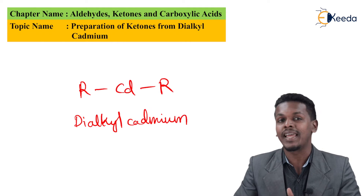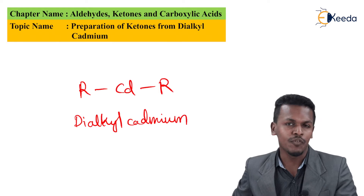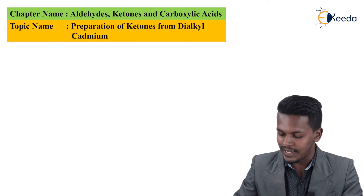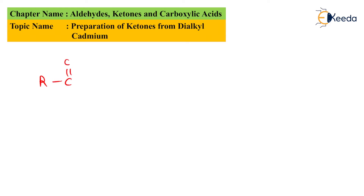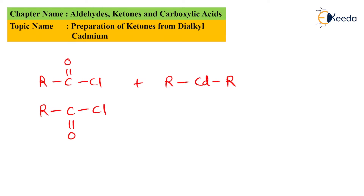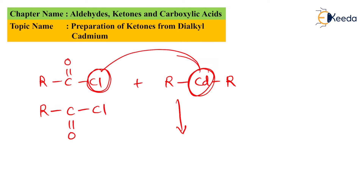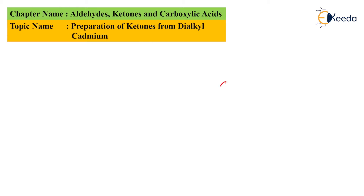Now from dialkyl cadmium we have to prepare a particular ketone. Suppose we have acyl chloride, RC(=O)Cl, and we react it with dialkyl cadmium, RCdR. If we use two moles of the acyl chloride RC(=O)Cl, the cadmium has a greater tendency to attract the Cl, so the byproduct obtained is CdCl₂.